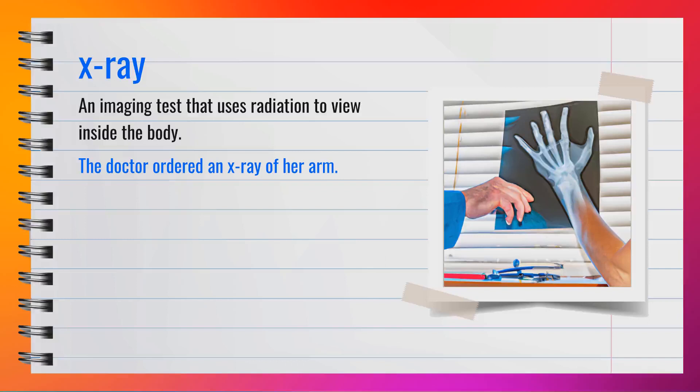The word x-ray, spelled X-R-A-Y, is an imaging test that uses radiation to view inside the body. Synonyms include radiograph and medical imaging. For example, the doctor ordered an x-ray of her arm. In summary, an x-ray is a test to view inside the body with radiation.